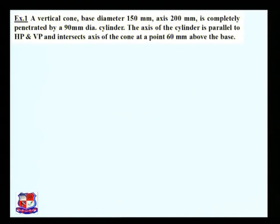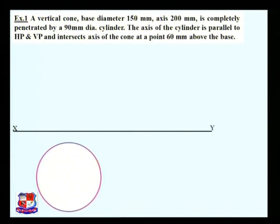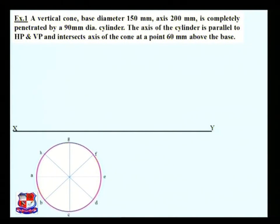First, draw the XY line, which represents the intersection of the horizontal plane and vertical plane. Then draw a circle below the XY line having diameter 150 mm. Divide the circle into an equal number of parts. These divisions are made to draw imaginary generators over the outer surface of the cone — since the cone has no edges, we divide its slant surface into imaginary lines. Name the endpoints: a, b, c, d, e, f, g, and h.